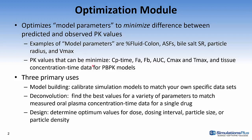PK values that can be minimized include the CP time curve or the fit to the CP time curve, fraction absorbed, oral bioavailability, area under the curve, Cmax and Tmax, and tissue concentration data for PBPK models.